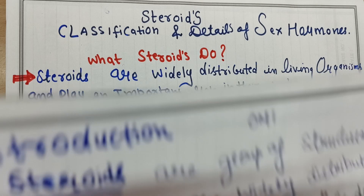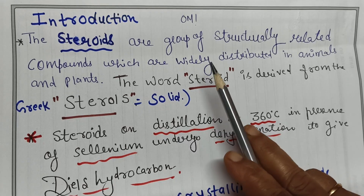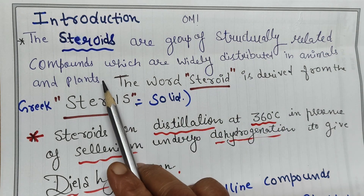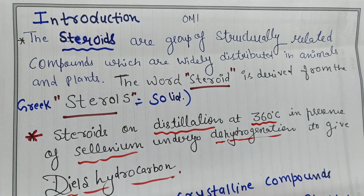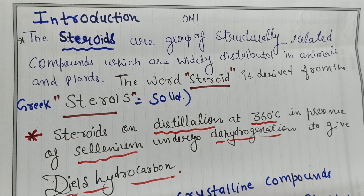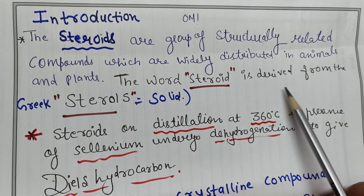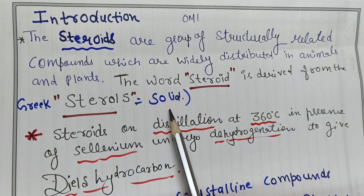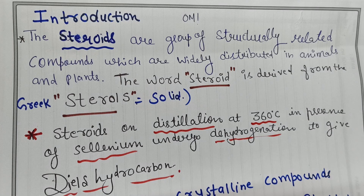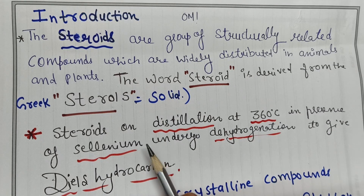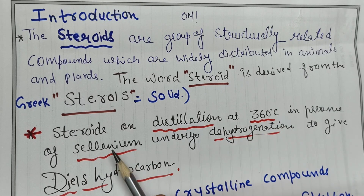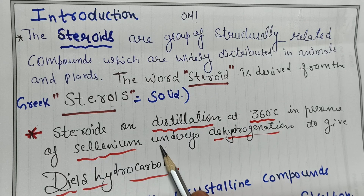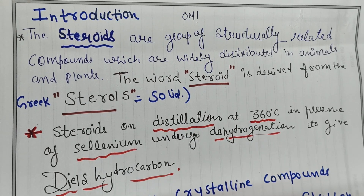Steroids are a group of structurally related compounds widely distributed in animals and plants. The word 'steroid' is derived from the Greek word 'sterol', meaning solid — they are crystalline compounds. On distillation at 360°C in the presence of selenium, steroids undergo dehydrogenation to give Diels' hydrocarbon.